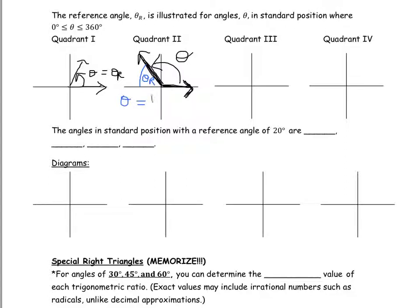We could get theta by knowing that 180 degrees subtract the reference angle gives us our angle theta in standard position. In quadrant three, the reference angle is the angle between the negative x-axis and the terminal arm. The connection between theta and theta r in quadrant three is that theta equals 180 degrees plus the reference angle.